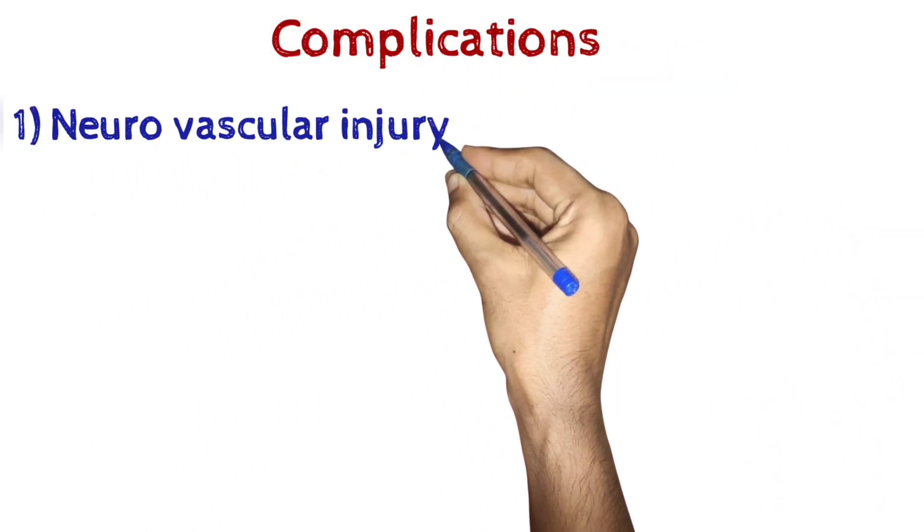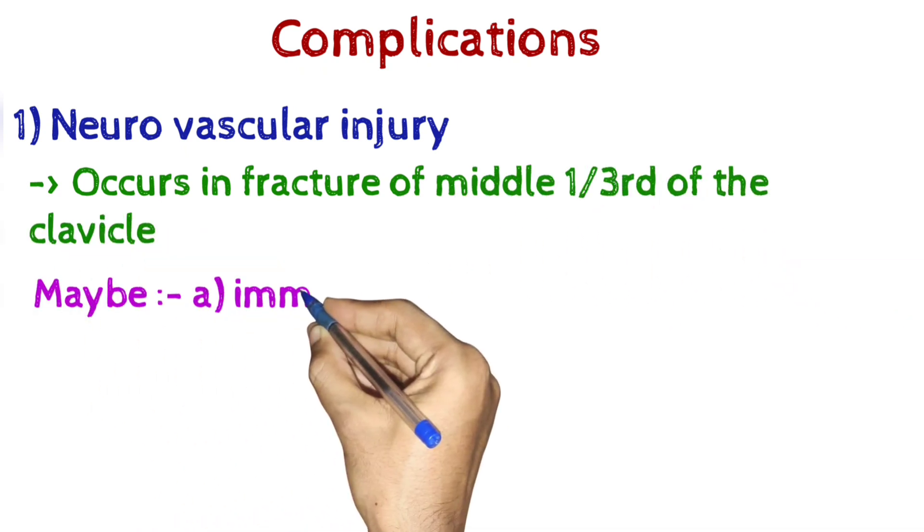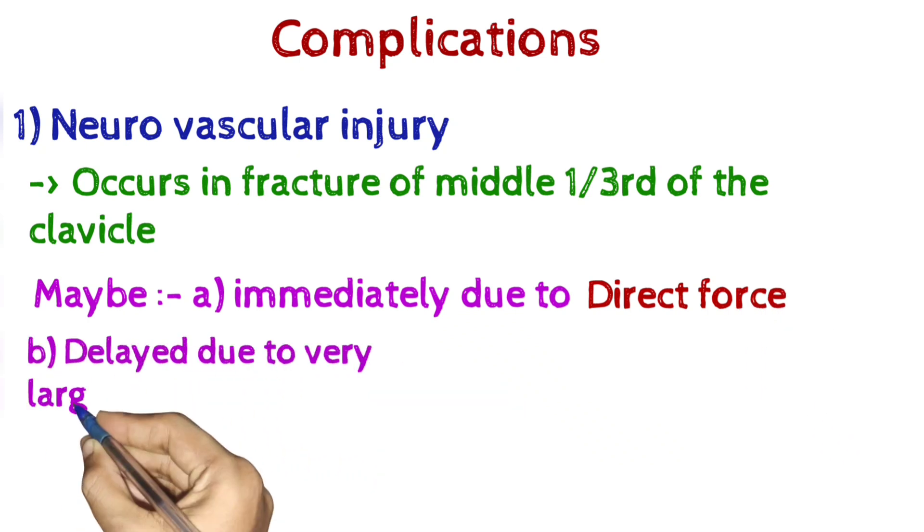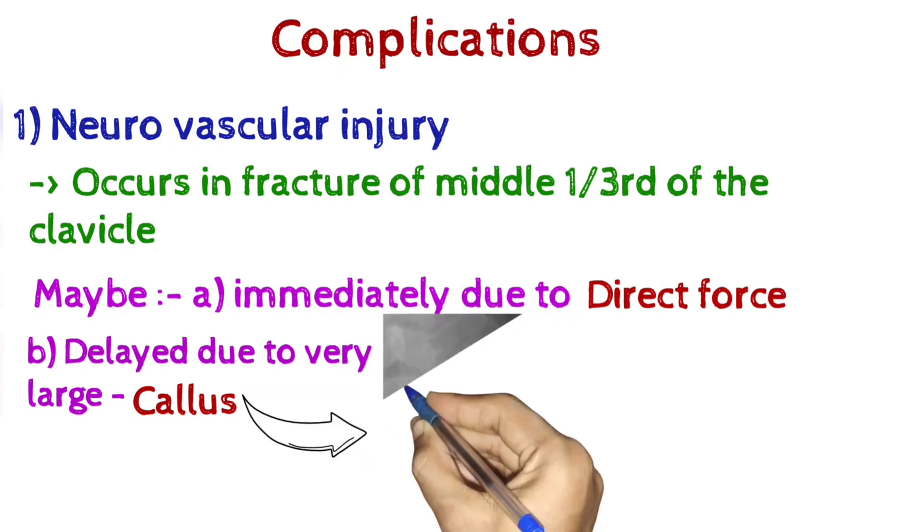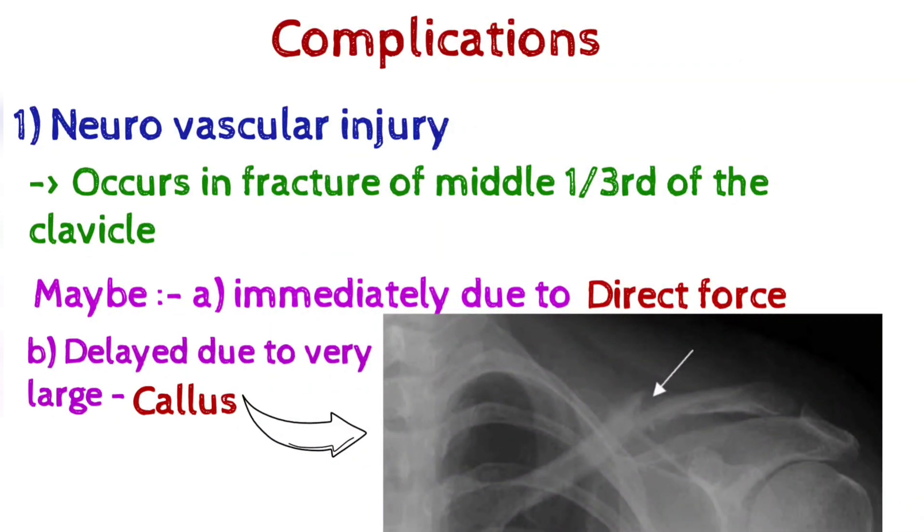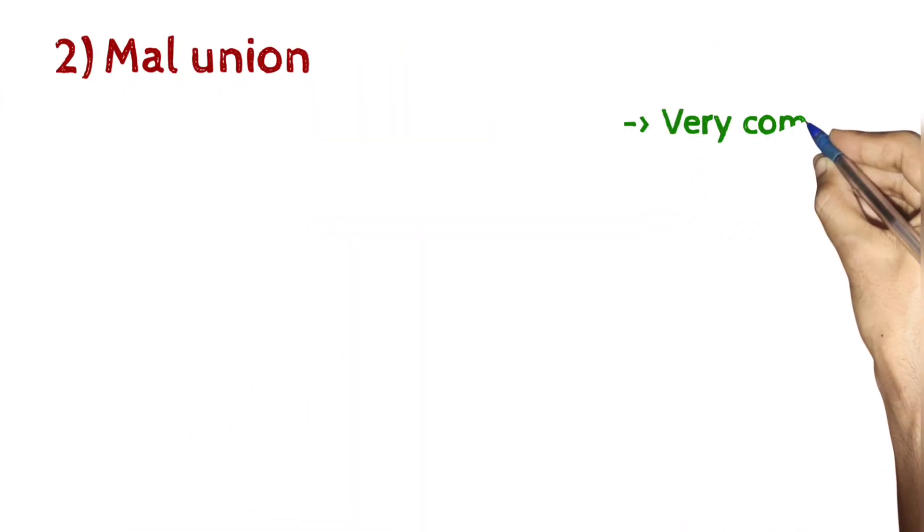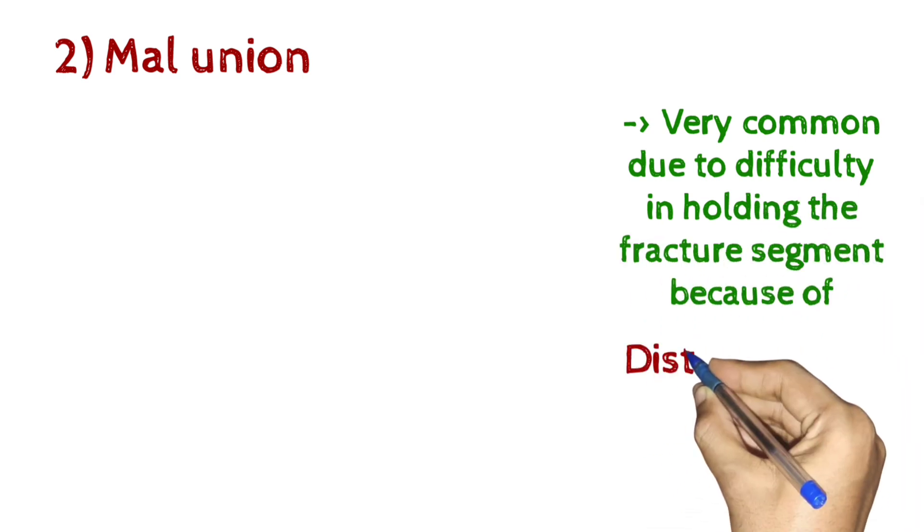Complications: 1. Neurovascular injury occurs in fracture of middle one-third of the clavicle, may be immediately due to direct force or delayed due to very large callus. 2. Malunion is very common due to difficulty in holding the fracture segment because of distracting forces.